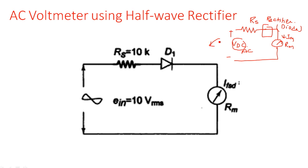The same has been implemented here. A diode is used in series with the meter; all components are in series. As it is a half-wave rectifier, we are using a single diode. For example, we have taken the input voltage as 10 volts VRMS.